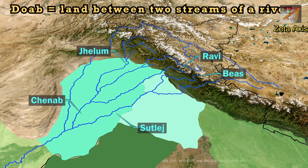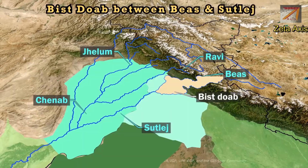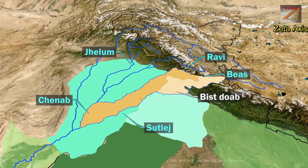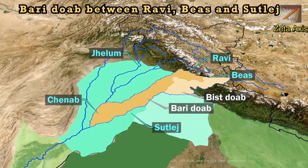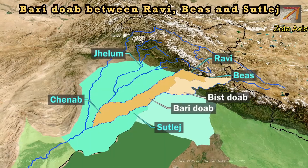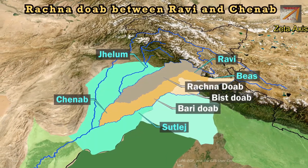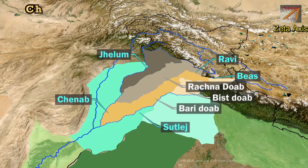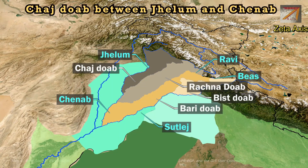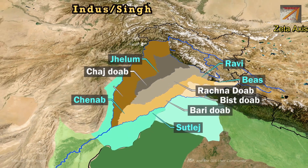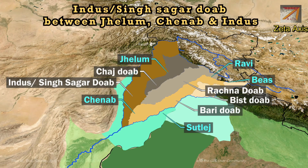The doabs of the Punjab Plains are: Bist Doab lying between the Beas and Sutlej rivers; Bari Doab lying between the Beas and Ravi rivers; Rachna Doab lying between the Ravi and Chenab rivers; Chaj Doab lying between the Chenab and Jhelam rivers; and Sindh Sagar Doab lying between the Jhelam, Chenab, and Indus rivers.